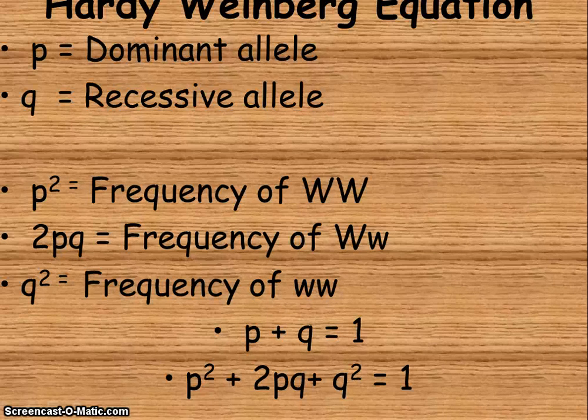So the two equations that we're going to be working on is p plus q equals 1 and p squared plus 2pq plus q squared equals 1. It's kind of going to be like a plug and chuck. We're going to figure out what one thing is, use one of the equations to figure out what the other letter is, and then we can modify with the squares and so forth.